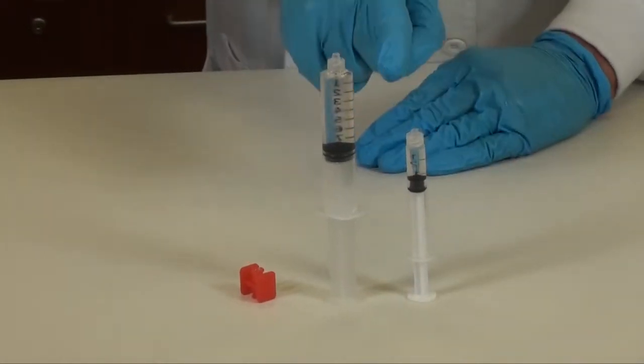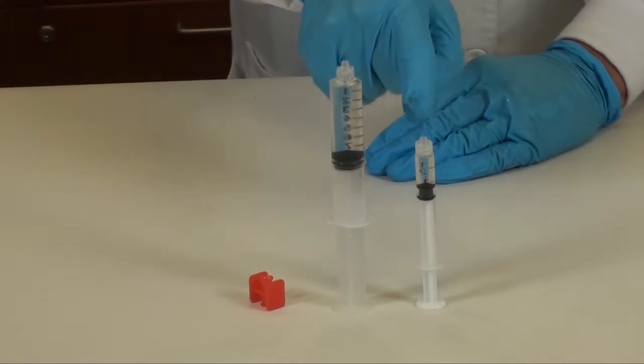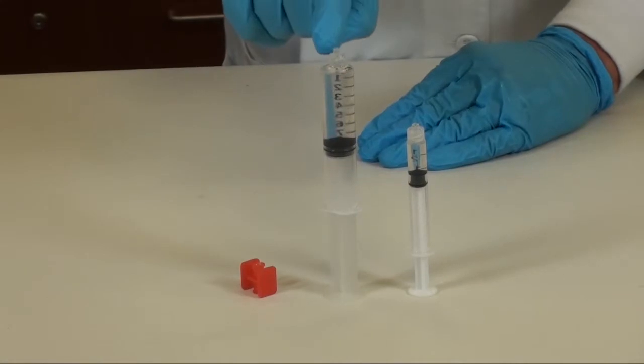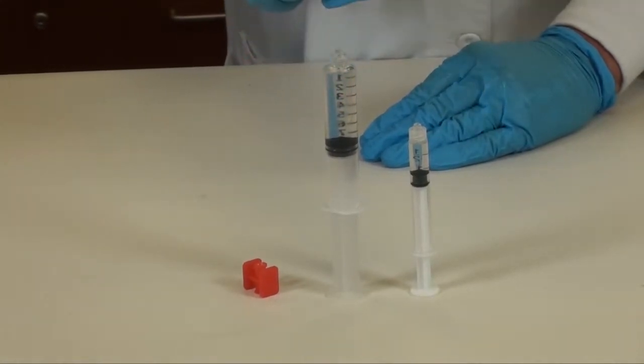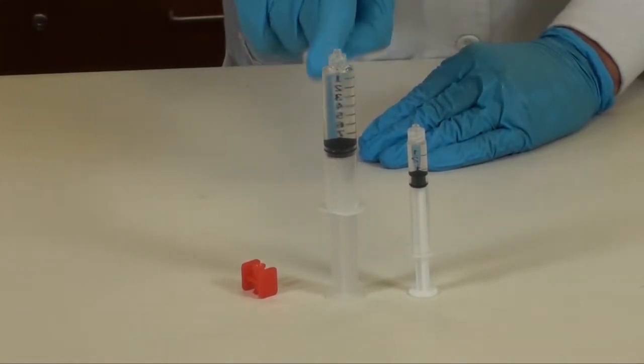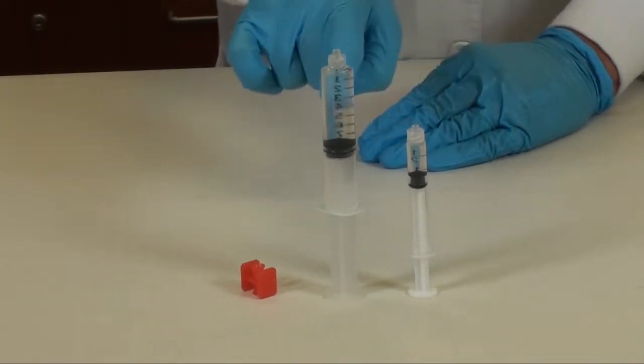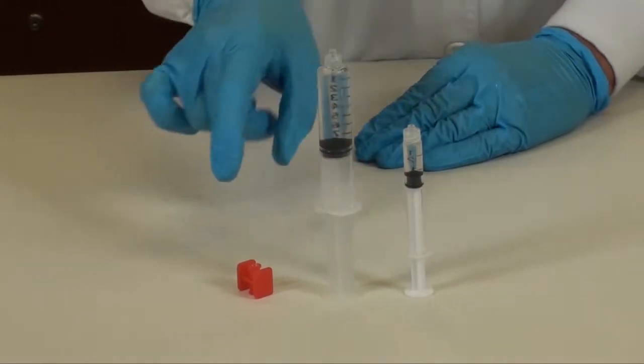As a reminder, in the 3ml syringe we have our acyclovir lidocaine solution which are our active ingredients. And in the 12ml syringe we have our poloxamer solution. And this is the aqueous phase. We want to go ahead and add the 3ml syringe into the 12ml.